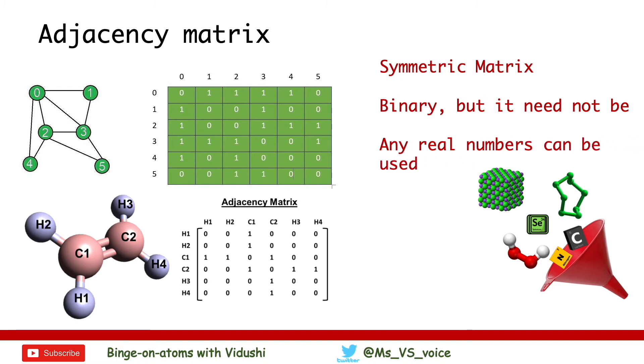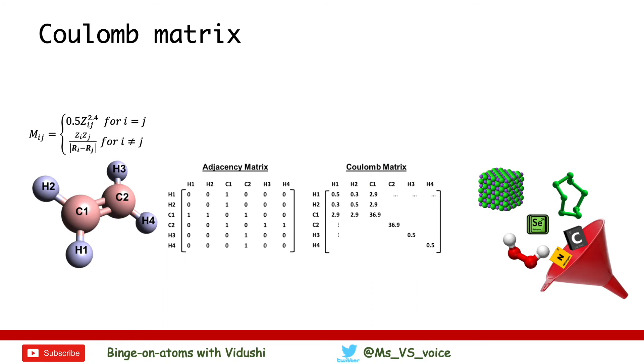However, there is no need for this matrix to be binary. You can use any real numbers to indicate information specific to your structure and problem. Specific information about the chemistry of the atomic species could be incorporated into adjacency matrix leading to coulomb matrix.